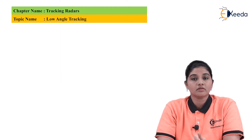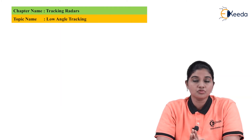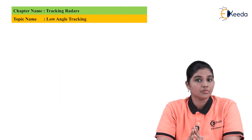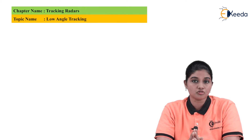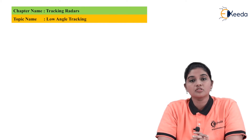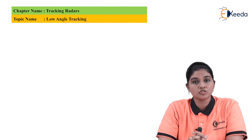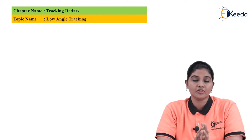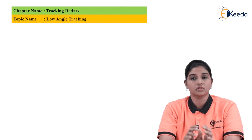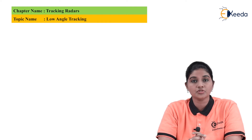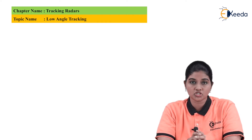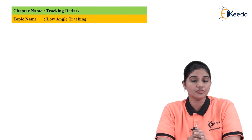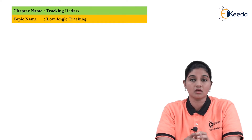The radar is used to monitor the behavior or position of the target. The radar continuously monitors the position of the object by tracking it. When tracking at low elevation angle and near to the surface of the earth, the radar receives two different echo signals from the same target.